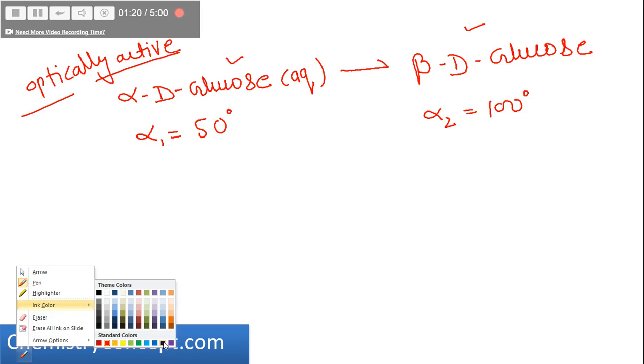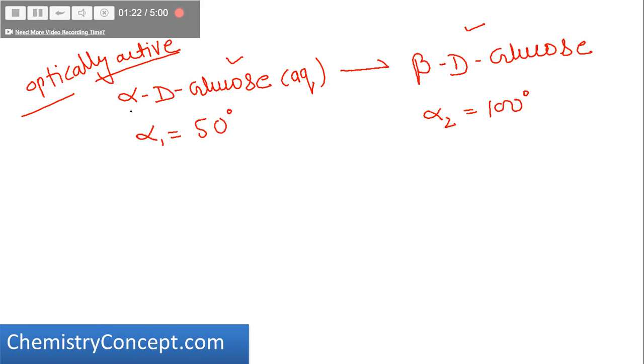So what will happen? If I take an aqueous solution of alpha-D-glucose and leave it for some time, it will start converting into beta-D-glucose. That means the rotation of the solution will increase.